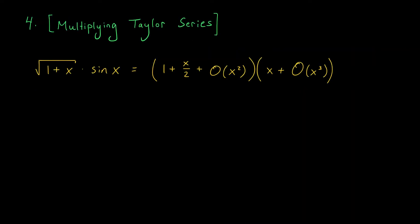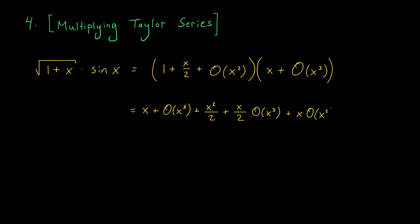Multiplying two Taylor series now also becomes feasible. Suppose, for example, that you wanted to know the Maclaurin series for the product of the square root of 1 plus x and sine x. The first function's Maclaurin series can be found using the binomial series — the first couple terms are 1 plus x over 2, and the remaining terms are of order x squared. The Maclaurin series for sine x is made up of odd powers of x, so the first term is x and the remaining terms are all of order x cubed as x goes to 0. To multiply these two series, distribute the terms as you normally would. Multiplying 1 into the second bracket gives x plus big O of x cubed, and multiplying x over 2 into the second bracket gives x squared over 2 plus x over 2 times big O of x cubed.